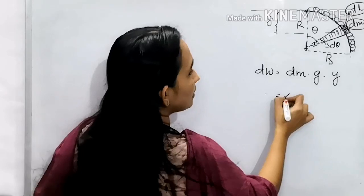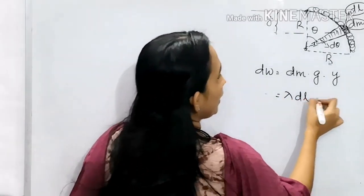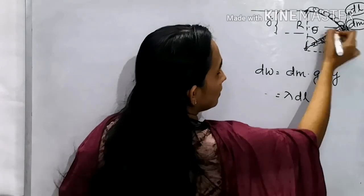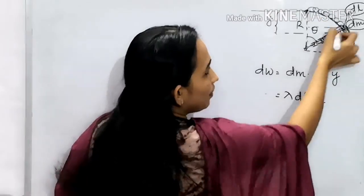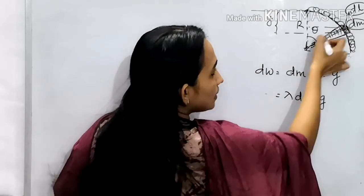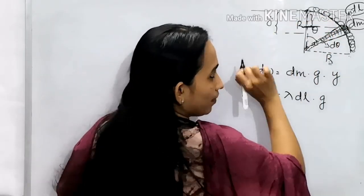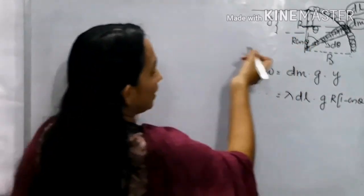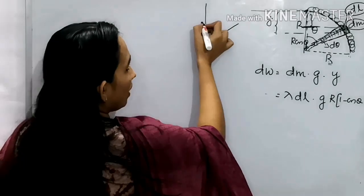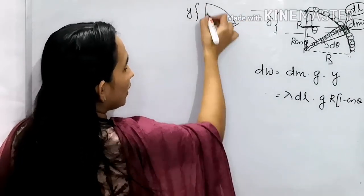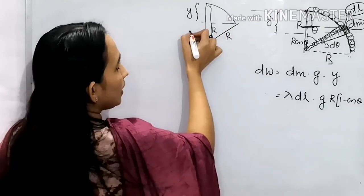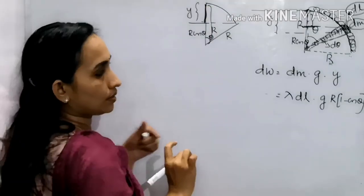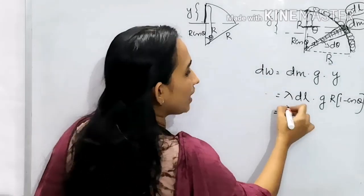Now what is dm? dm is nothing but λ·dl, where λ is mass per unit length. So dW = λ·dl·g·y. Now I need to find y, the depth. This is a quarter circle of radius r. Each element is at radius r from the center. The vertical component is r·cosθ, so the depth y = r(1 − cosθ). And dl = r·dθ.